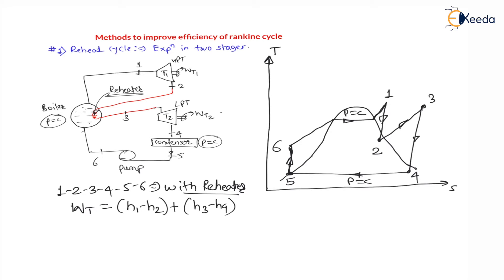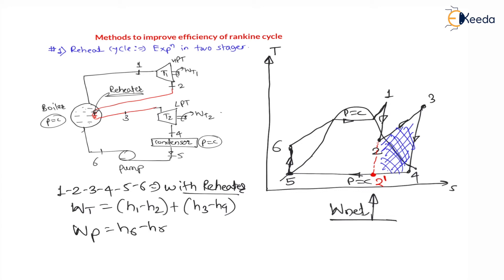Without the reheater, there would be expansion in only the high pressure turbine from 1 to 2'. With the reheater we get extra area for the cycle — the blue hatched area is the extra area obtained. As area enclosed by the diagram is network, increasing area means network is increasing. In both cases — with and without reheater — the pump work is H6 − H5, which is constant. Therefore, since network equals turbine work minus pump work, and pump work is constant while network is increasing, turbine work is also increasing.